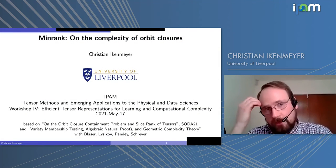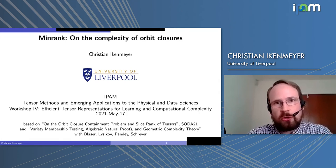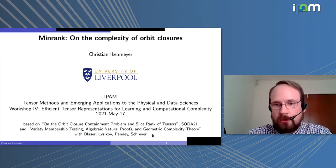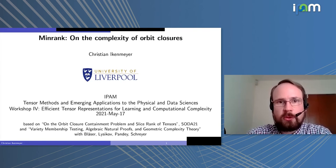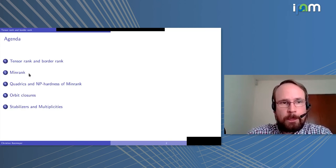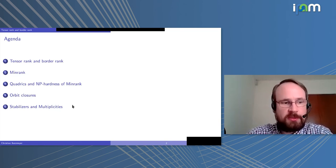Thank you very much, and thanks to the organizers for giving me the opportunity to speak here. This is joint work with Markus Blaeser, Vladimir Lysikov, Anurag Pandey, and Frank-Olaf Schreier, from this year's SOLAR conference. I'm going to talk about tensor rank and border rank, and a specific related problem called min rank, where we can prove NP-hardness, and then I will talk about orbit closures and stabilizers and multiplicities.